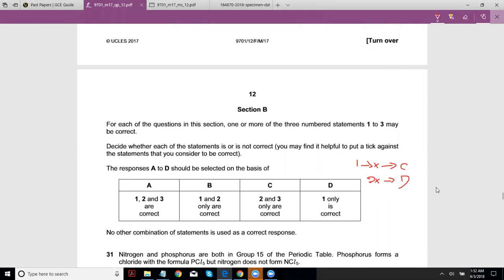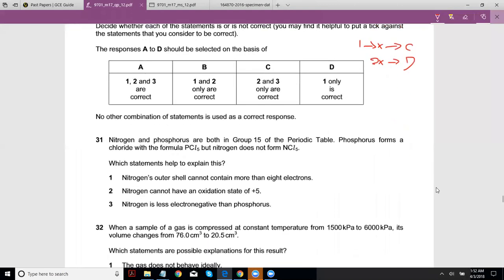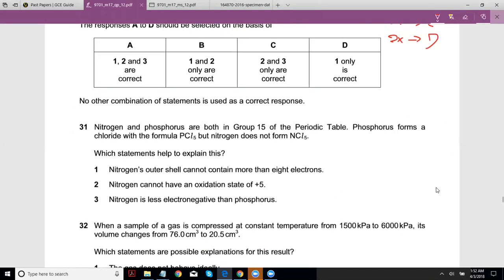Okay, so nitrogen and phosphorus are both in Group 15 of the periodic table. Phosphorus forms a chloride with formula PCl5, but nitrogen does not form NCl5, basically because of expansion and it can only happen in period 3, not period 2. Which statements help to explain this? Nitrogen's outer shell cannot contain more than eight electrons - I think that helps to explain it, it cannot expand, right?